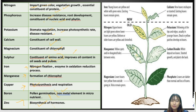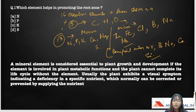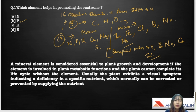This picture depicts the deficiency symptoms in different areas of a plant caused by nutrient deficiencies. You can pause the video and take a screenshot of this slide to read it properly. Going back to the question — which element helps in promoting the root zone? The options are A: nitrogen, B: phosphorus, C: potassium, D: sulfur. The correct answer is phosphorus, as it helps in promoting the root zone and the formation of roots.